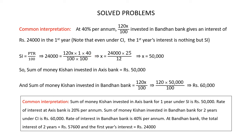On solving this, we get x is equal to 50,000. So the sum of money Kishan invested in Axis Bank is Rs 50,000. And the sum of money Kishan invested in Bandhan Bank is 120x/100. Substituting the value of x, we get 120 multiplied by 50,000 divided by 100, which is nothing but Rs 60,000. So Kishan invested Rs 60,000 in Bandhan Bank.